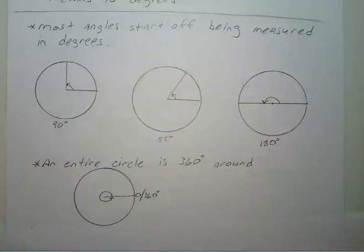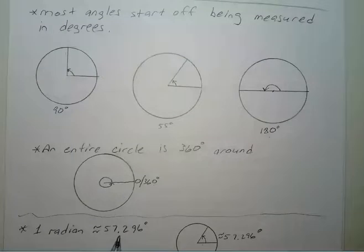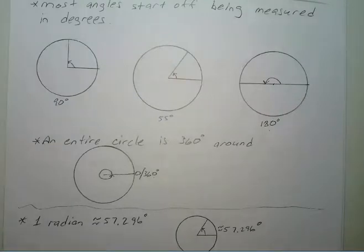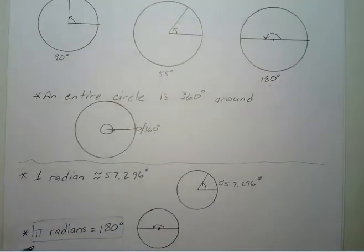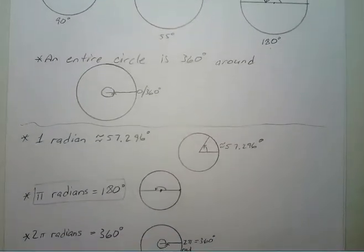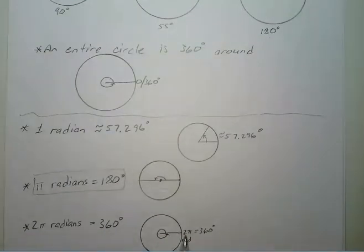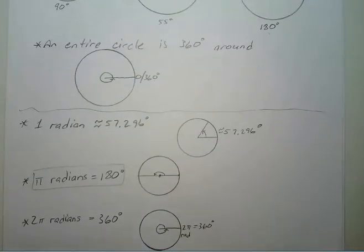We're going to look at a different way to measure angles other than degrees, and those are called radians. One radian is about 57.3 degrees. If you get pi radians, that's equal to 180 degrees. And 2 pi radians is 360 degrees — so if you start at a point and go all the way around and back to that point, you went 360 degrees or 2 pi radians.